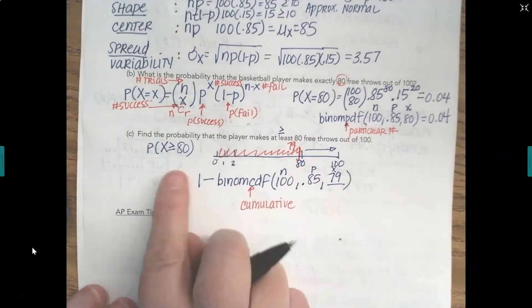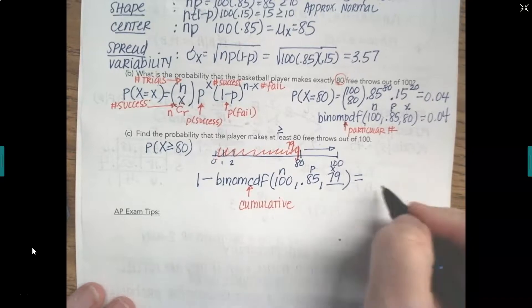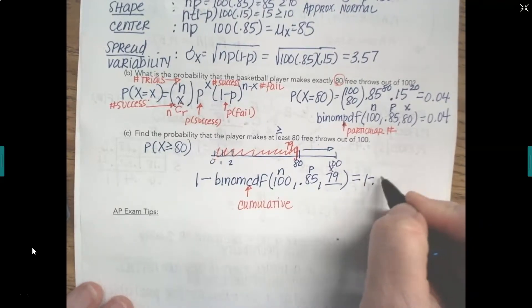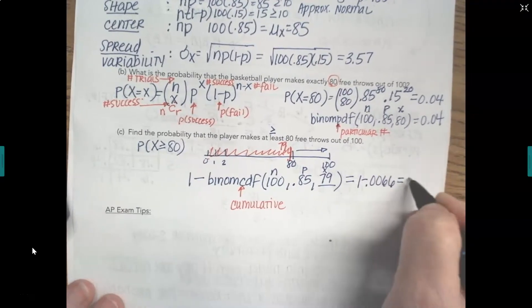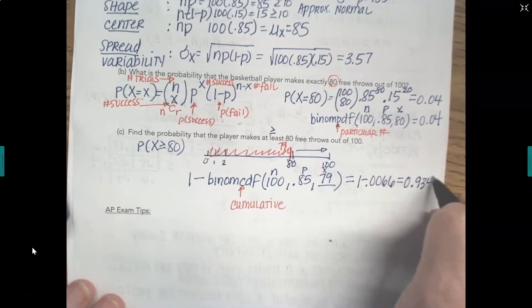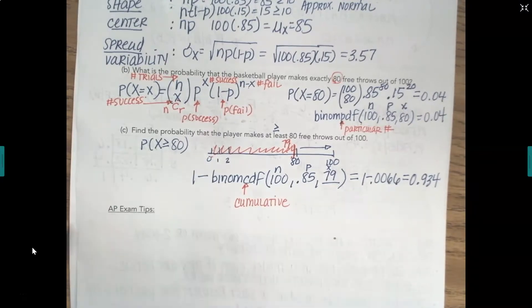Because 80 is included in the at least. And when we put this into our calculator, we get 1 minus .0066, which equals 0.934. He has a 93.4% probability of making at least 80 free throws. Pretty good. He's a pretty good free throw shooter.